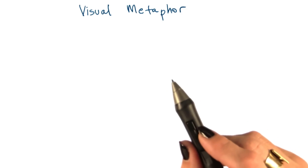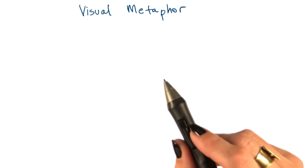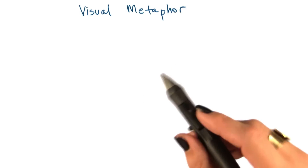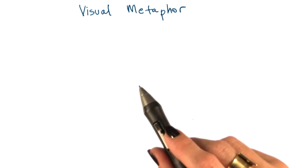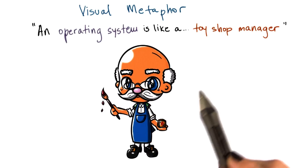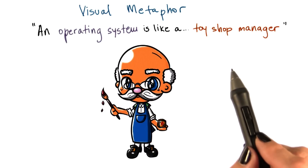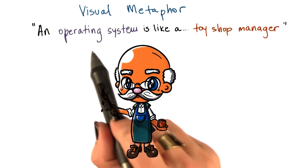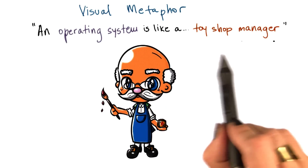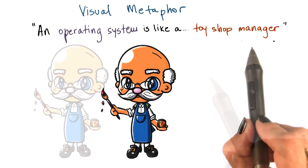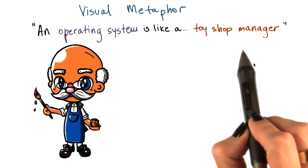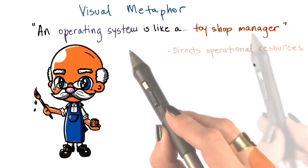While this entire course will cover many elements of an operating system, it would be nice to have a simple illustration of what an operating system is like. So to give a visual metaphor using our toy theme, we can say that an operating system is like a toy shop manager. At a high level, how is a toy shop manager like an operating system?